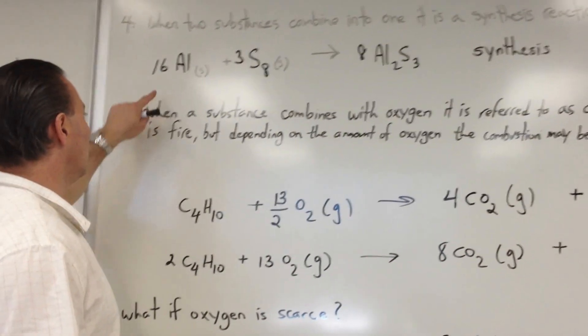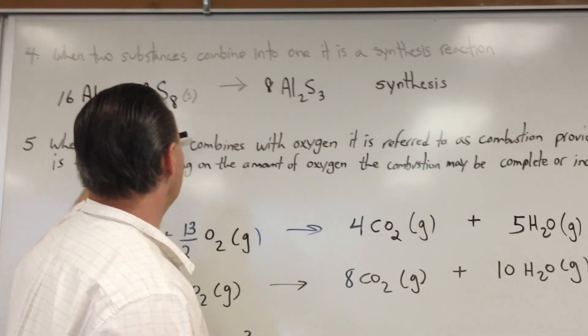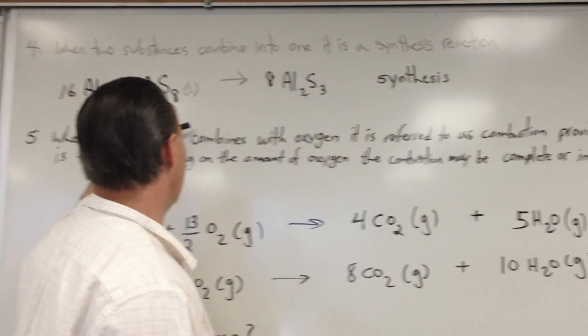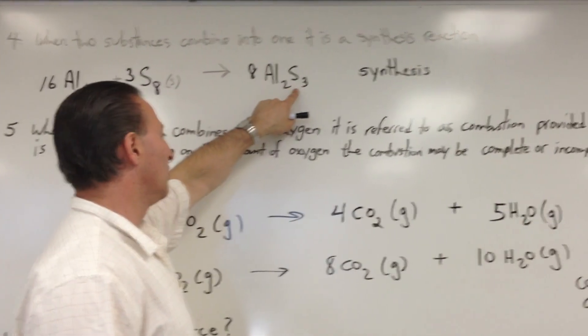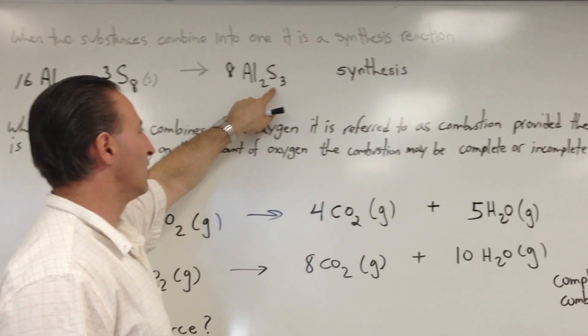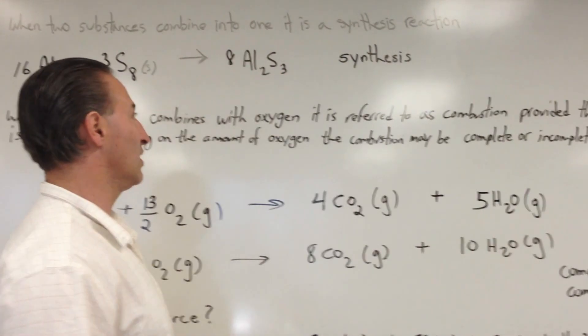And when we balance it, we start by looking at S8. We realize that we need eight sulfur atoms to appear on both sides, at least. But we notice that the S3 is the form that appears on the right side. Aluminum sulfide will have an S3 in it. So how do we get it balanced?